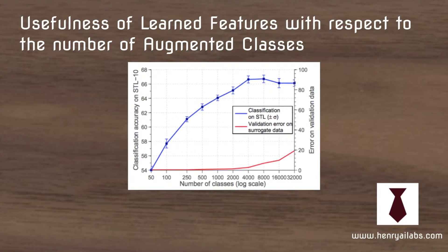So this plot shows the usefulness of the learned features with respect to the number of augmented classes. If you imagine doing data augmentations like rotations, translations, color space transformations, there's a huge set of possible ways you could do this and there's a ton of different classes you could potentially construct in this way.